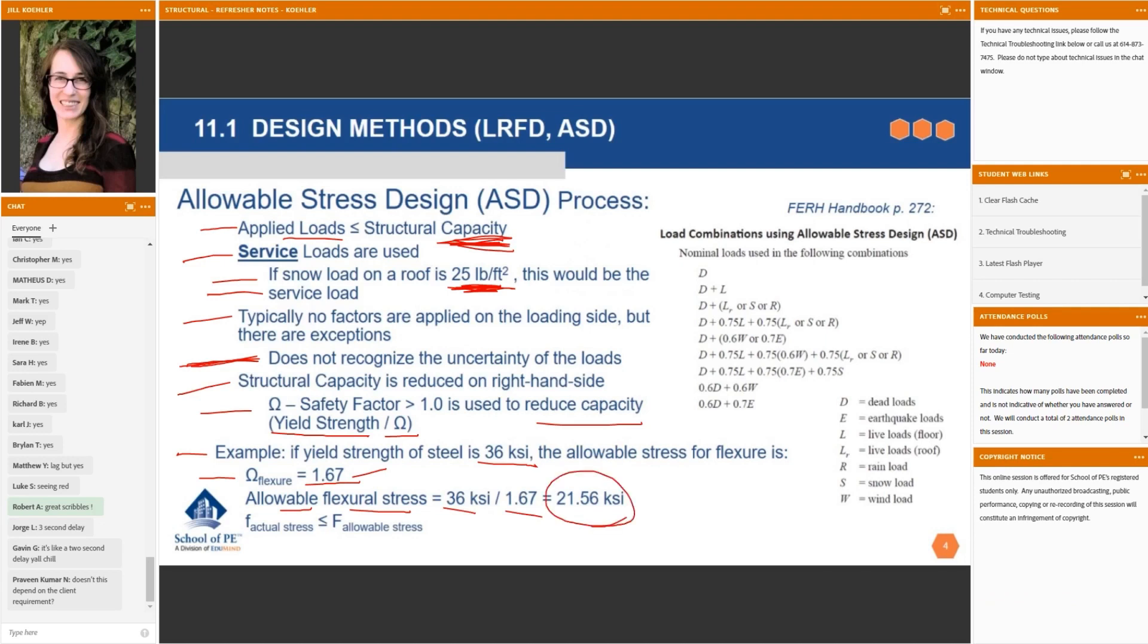So what does that mean? If you have a problem and you know what the loads are, you basically use the service loads. All right. So now we have service loads. So what loads do we actually expect the building to experience? We use those to determine some quantity on the left-hand side of this equation. But then on the right-hand side of the equation, we use that reduced capacity. It's been reduced by dividing by 1.67.